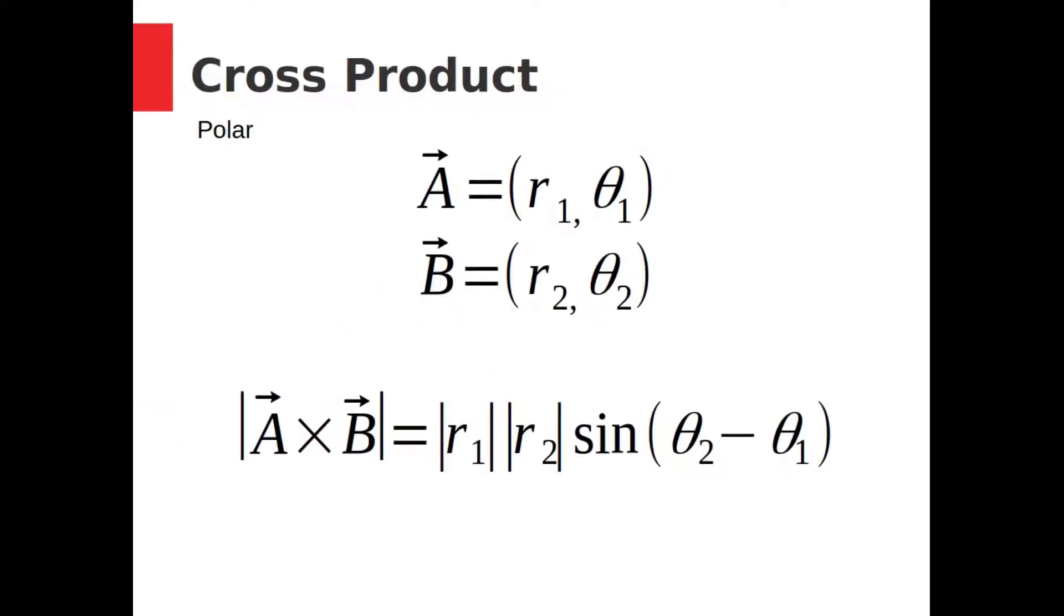A cross product is an operation that is done on two vectors. It produces another vector as its result. That means you have to find not only the size of the resulting vector, but also its direction.